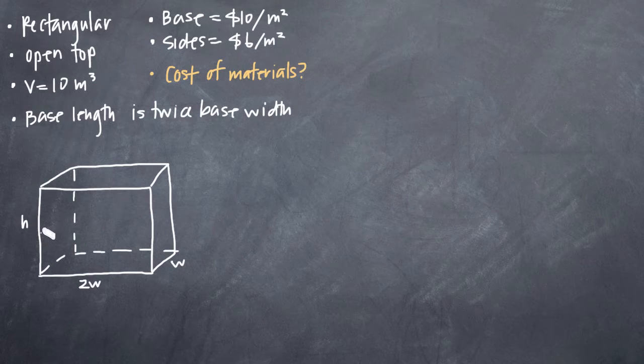Now we know we're looking for cost, so we want to go ahead and start writing down our equation for cost, which we'll call C. We know that the cost of building this box is going to be dictated by the fact that the cost of the materials for the base is $10 per square meter and the cost of the materials for the sides is $6 per square meter. So let's go ahead and start with the base.